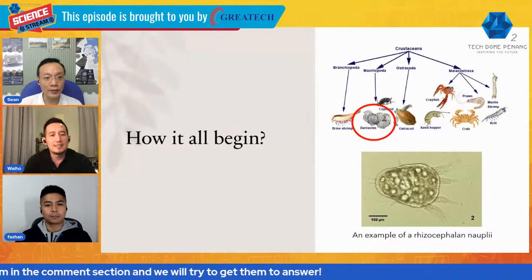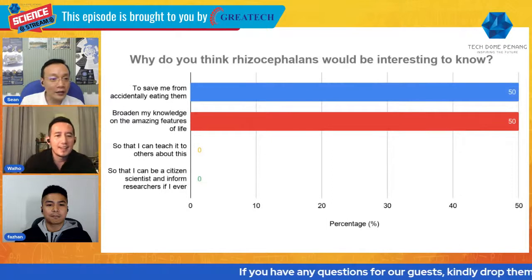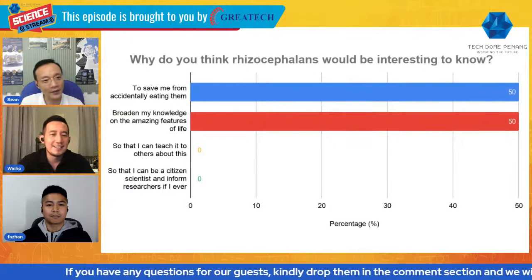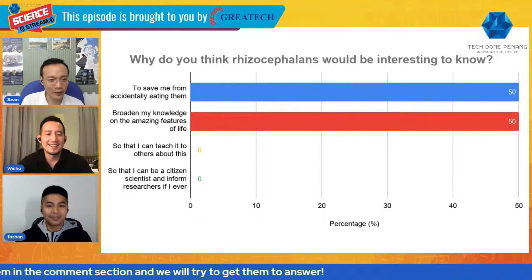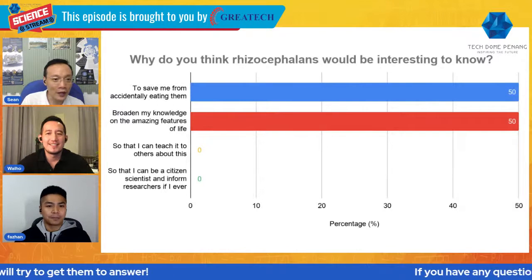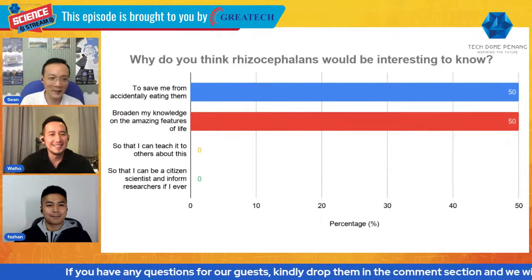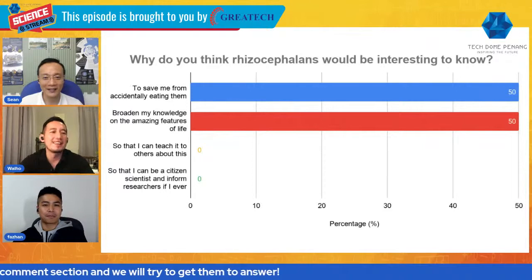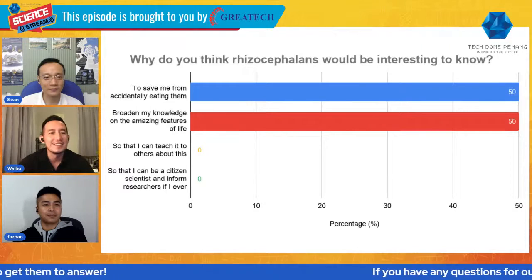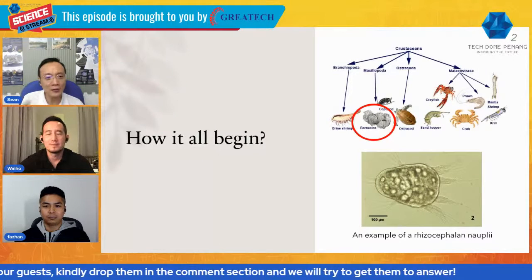Let's look at the poll results. It looks like a tie between 'to save themselves from accidentally eating' — we'll look into whether it's actually safe — and 'to broaden my knowledge of amazing creatures of life.' No one selected teaching another person or becoming a citizen scientist, though maybe they didn't understand what that means. We'll come back to citizen science later. Can you tell us more about how small these parasites are and how they can invade something a thousand times larger than them?